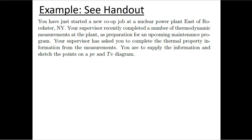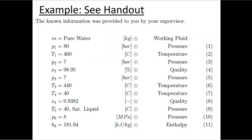The example can be found on my courses if you look at the starter sheet. The question goes like this: you have just started a new co-op job at a nuclear power plant east of Rochester, New York. Your supervisor recently completed a number of thermodynamic measurements at the plant as preparation for an upcoming maintenance program. You are given a list of known information for states one through six, and we know that the working fluid in all cases is water.